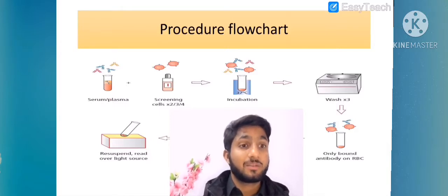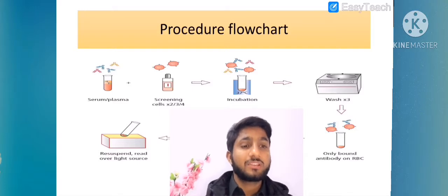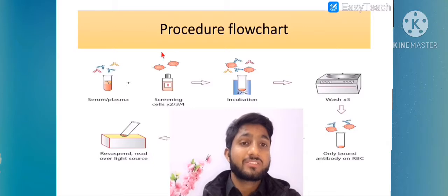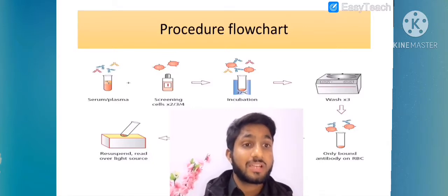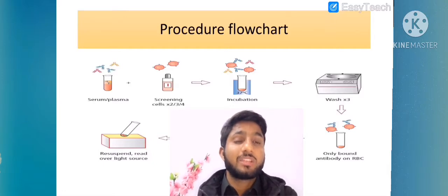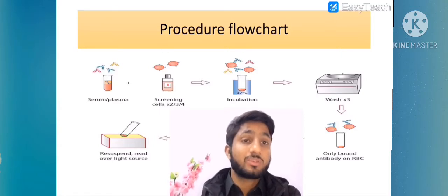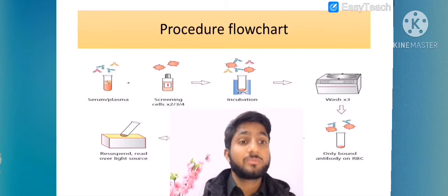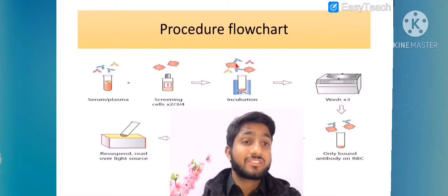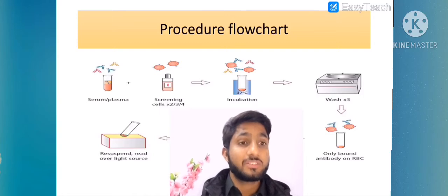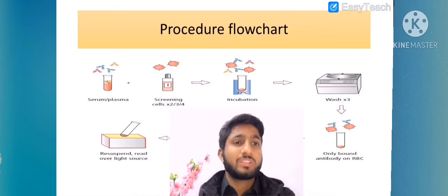We take serum or plasma from the recipient and add donor's cells. Why do we add donor cells? To create sensitized RBCs or check cells. Red cells are added to the test tube which contains antibodies, IgG from the recipient serum or plasma. When we add RBCs from the donor, these non-sensitized RBCs will become sensitized RBCs, meaning they will be coated with IgG antibody on their surface.